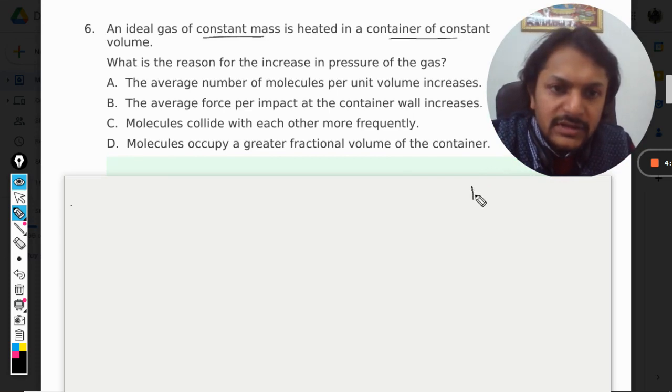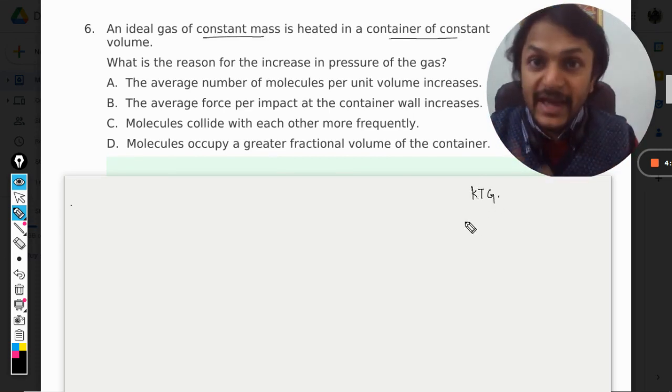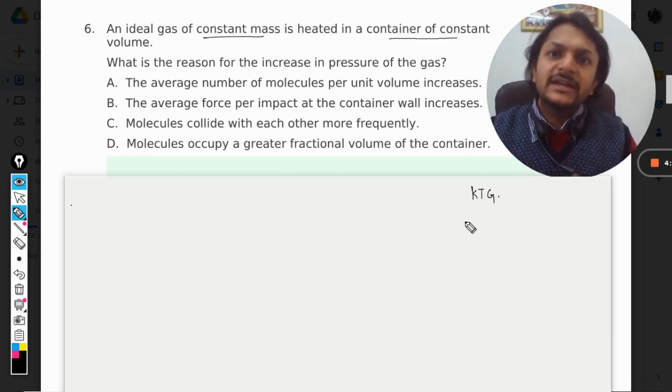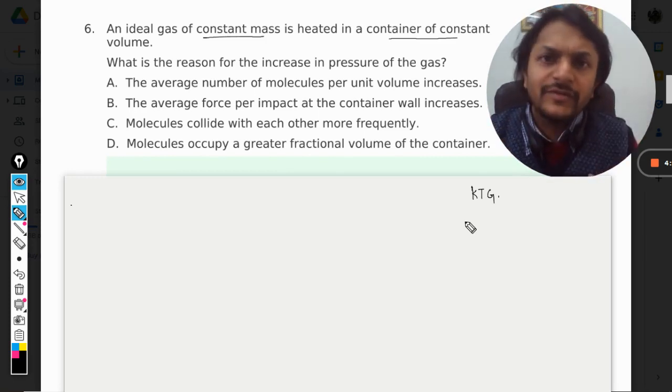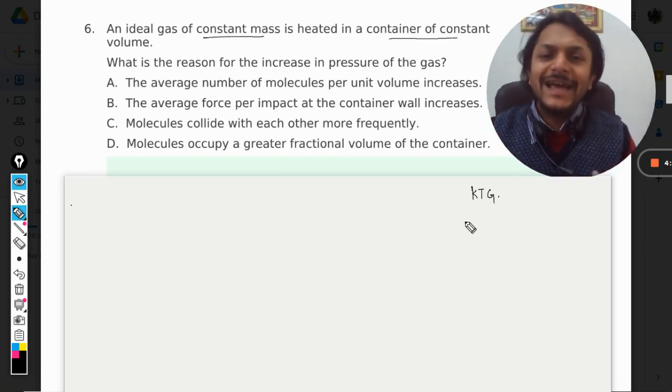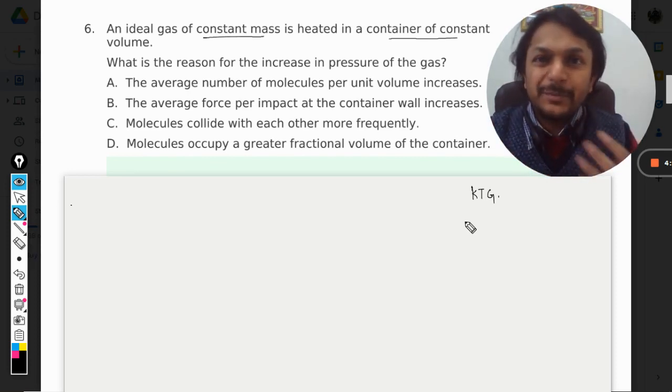As we know from KTG, that is kinetic theory of gases, whenever we increase the temperature of a gas, what happens to the molecules? The molecules of the gas have more velocity, they have more kinetic energy, and that's why they are moving at a faster pace.